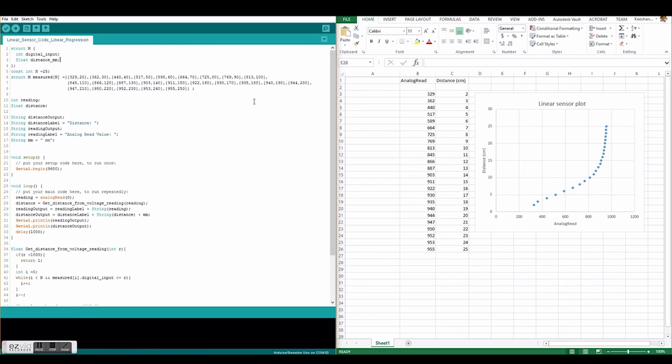So this is the Arduino code that Dr. Reed and I developed and on the right side this is the Excel sheet detailing the distance measurements versus the analog read values that that red board received from the analog input channel. This is a plot done based off of the analog read versus distance.